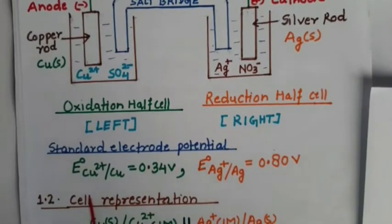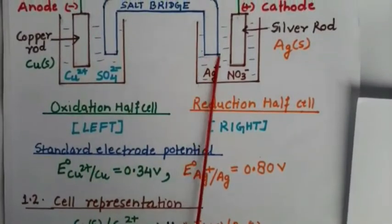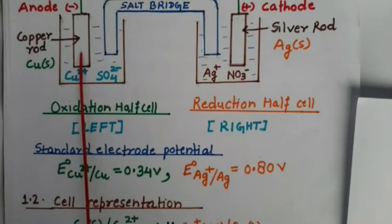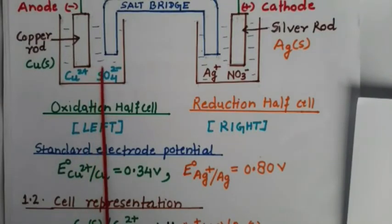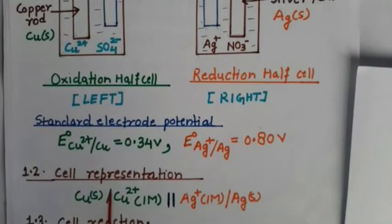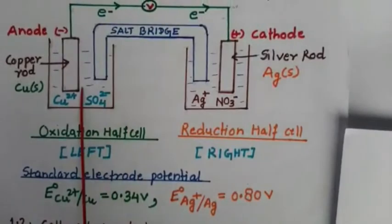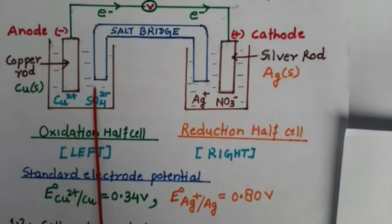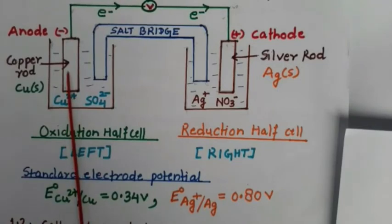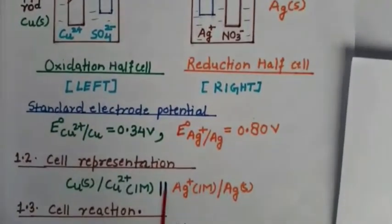For representing the cell, according to convention we start from the copper electrode. The copper electrode is separated from its solution by a single vertical line (slash). We write the electrode, then the aqueous solution containing its own ion: copper is the electrode and Cu²⁺ is the ion in the electrolyte. Next, we move to the salt bridge, which is represented by a double vertical line.